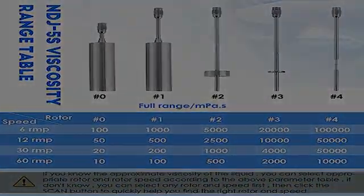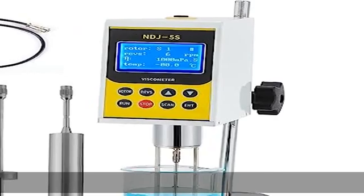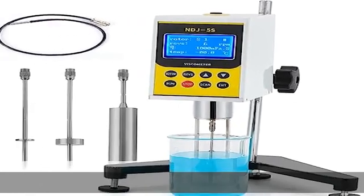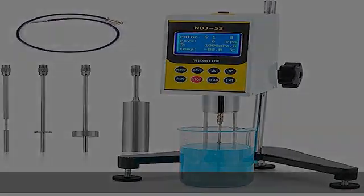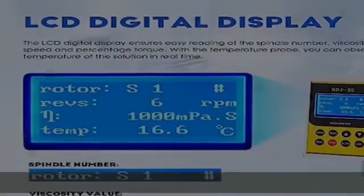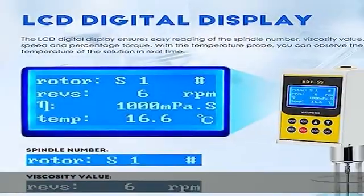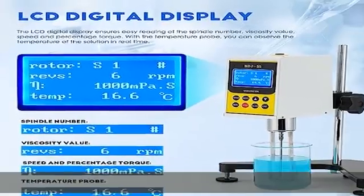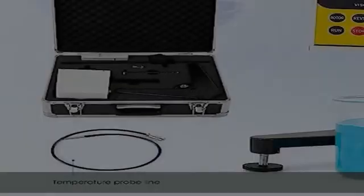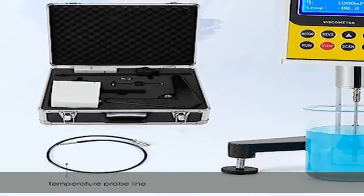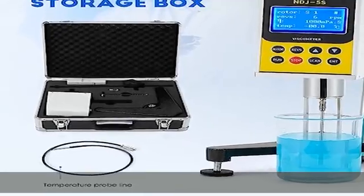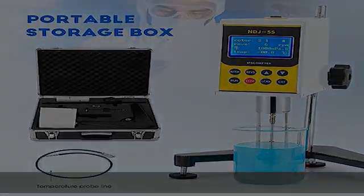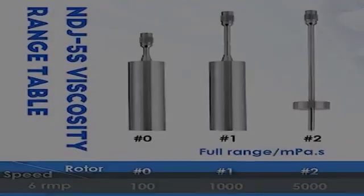The LCD digital display has perfect data acquisition and can display the number of rotors, speed, viscosity, and percentage at the same time. The LCD display uses high-brightness blue backlight to display results more clearly. Reliable and easy to use.